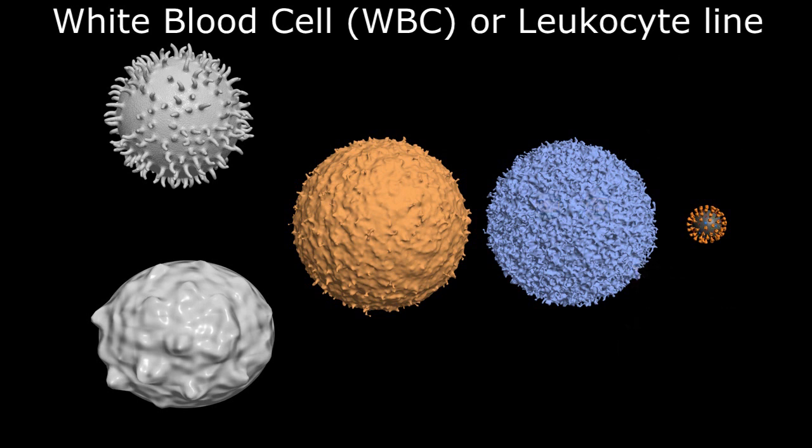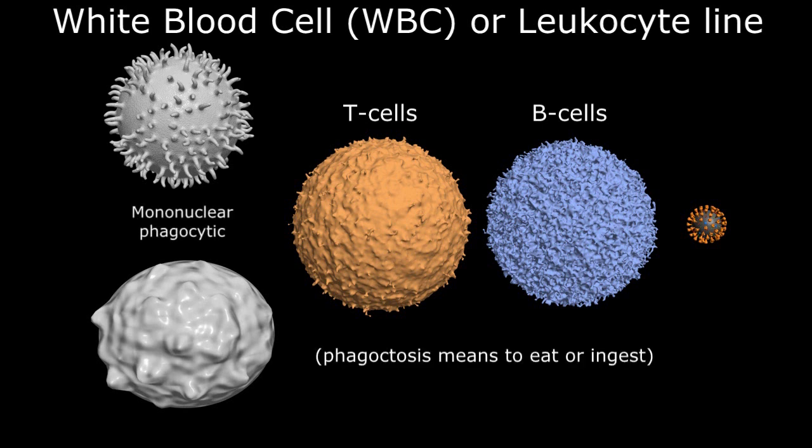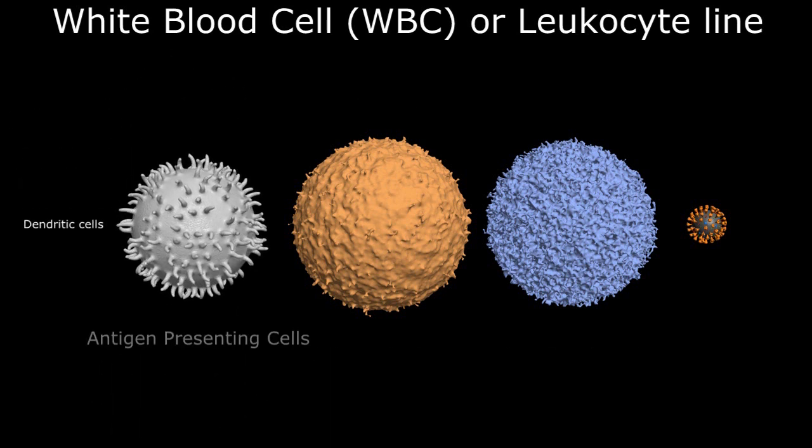The major players in this process are the B cells, T cells, and the mononuclear phagocytic cell line which include monocytes, macrophages, and dendritic cells. For our discussion, we will be focusing on the dendritic cells, also known as antigen-presenting cells or APCs.